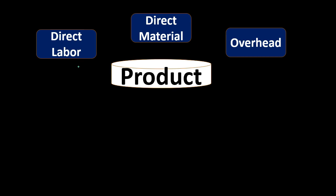Direct labor is very similar in that we are applying labor directly to a unit of production. So if we're making guitars and we have a custom guitar, and an individual is producing that guitar, then the labor being put in will be included in that guitar. It's intangible within the guitar, but when we think about the cost of the guitar, the labor that converts the wood into a useful product is a major component — that's the direct labor we can apply directly.